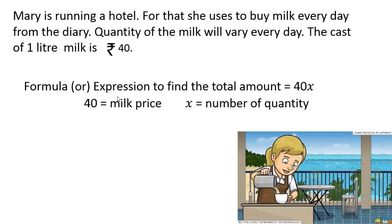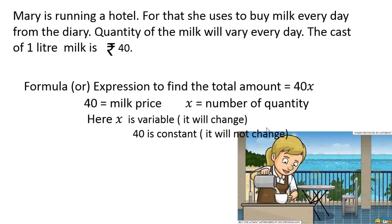The formula or expression to find the total amount is 40x. Here 40 is the cost of one liter milk, and x is a variable representing how many liters she is buying. The operation we use is multiplication: 40 into x. That means 40 is the milk price and x is the number of quantity. Here x is a variable, so it changes. 40 is constant, so it will not change.